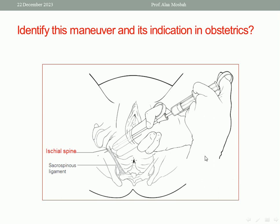This maneuver is the pudendal nerve block, using local infiltration anesthesia as you see in the syringe. The ischial spine is the site of the pudendal nerve, and this is the sacrospinous ligament. The pudendal nerve runs behind the ischial spine. So when we inject, we palpate the ischial spine and inject at this site for the pudendal block.